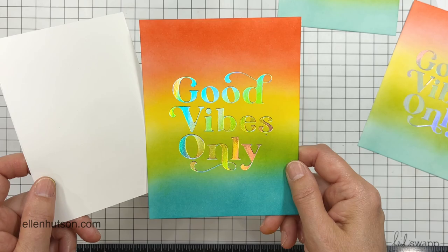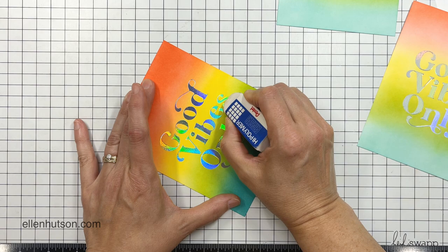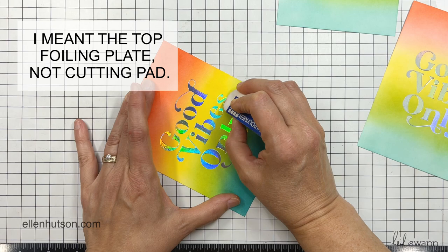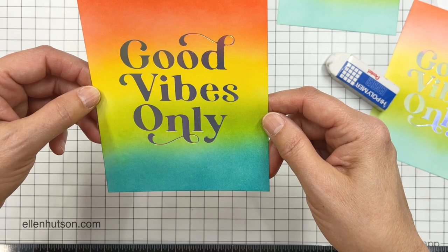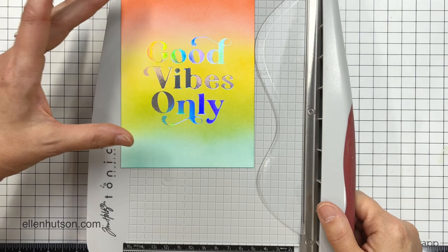Anyway, on the third one I did everything the same, but I added a shim of 80-pound cardstock that was the same size as this panel on top of that cutting pad. You can just anchor it down with a piece of washi tape if you're afraid it's going to move around. I found that gave me the kind of pressure that I really needed.